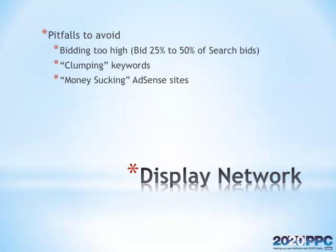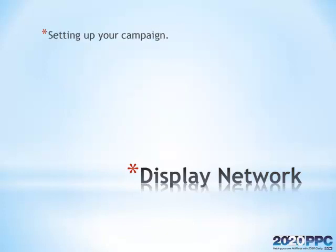The biggest problem with the content network is you can often end up advertising on websites that will not convert for you. They'll get plenty of clicks and plenty of visitors which you'll pay for, but those visitors might not convert. You want to make sure to avoid those websites. So that's what I'm going to show you in this video. Now let's go ahead and log into my sample account and finish setting up your campaign.